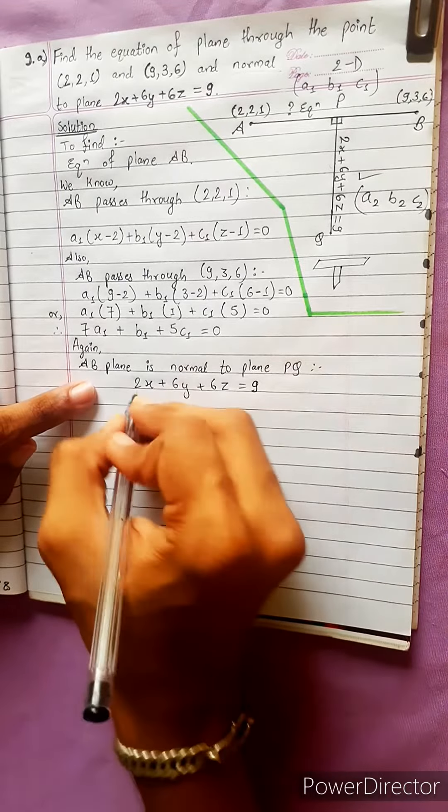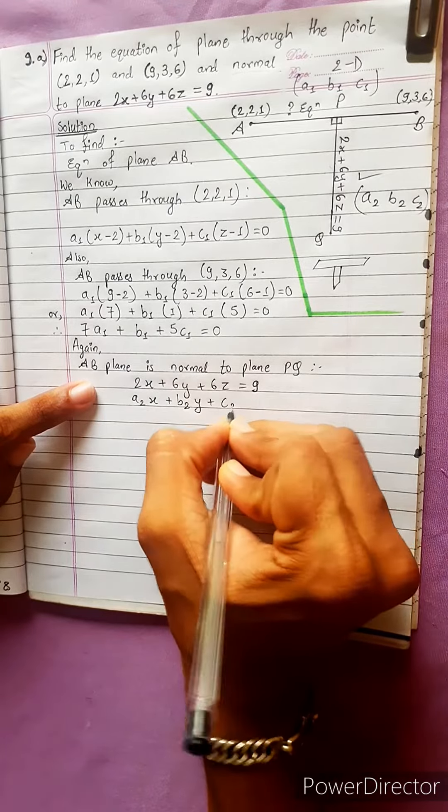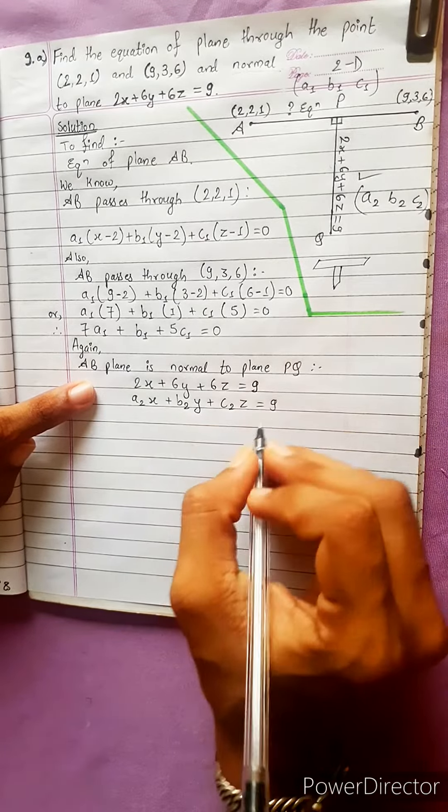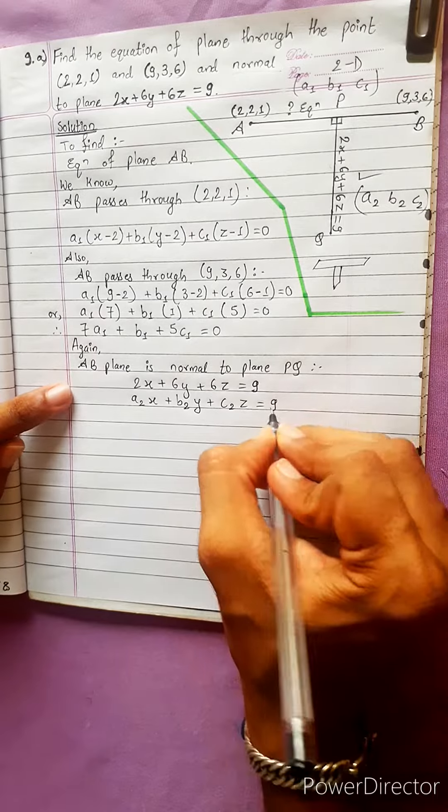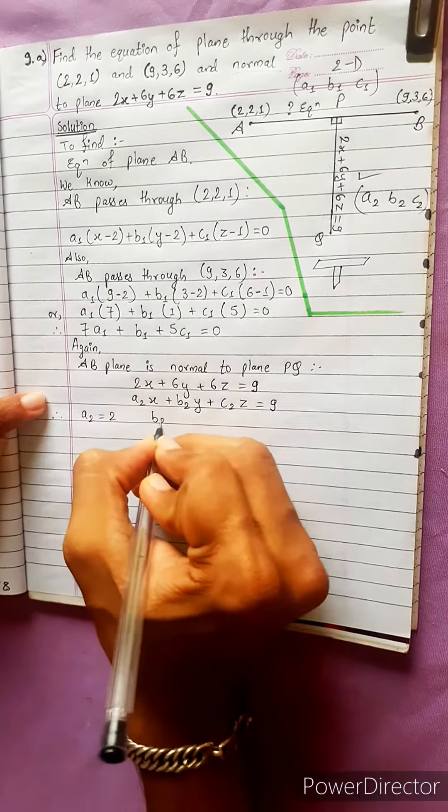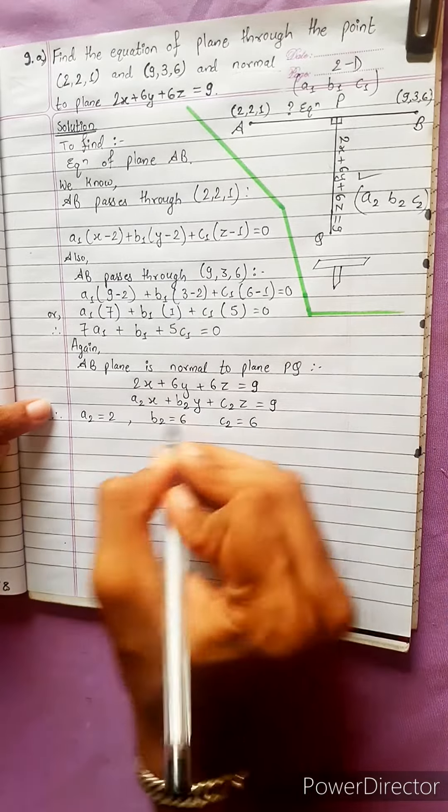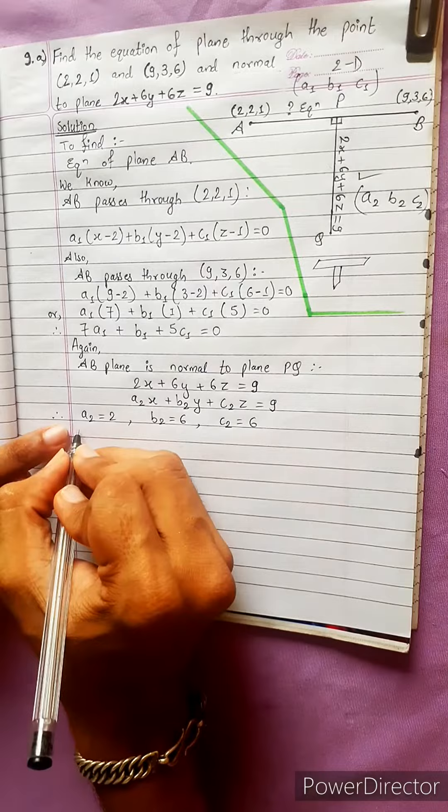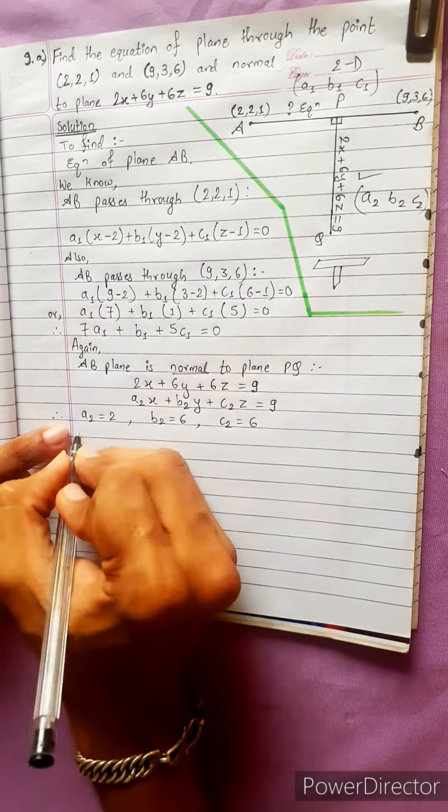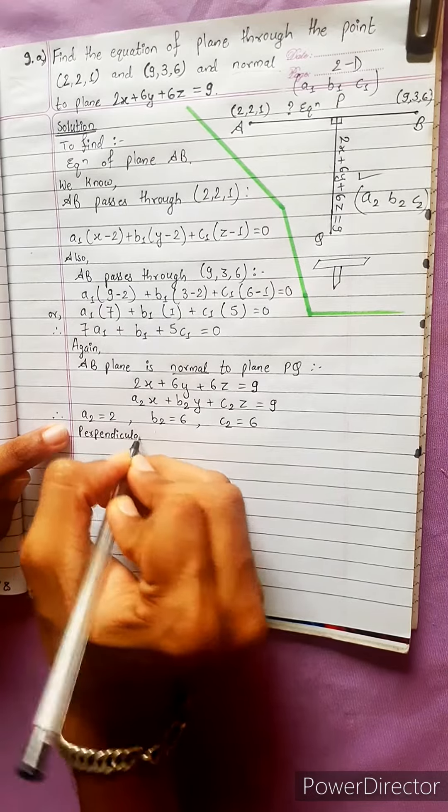From the standard form: a2x + b2y + c2z = d. Therefore a2 value is 2, b2 value is 6, and c2 value is 2.